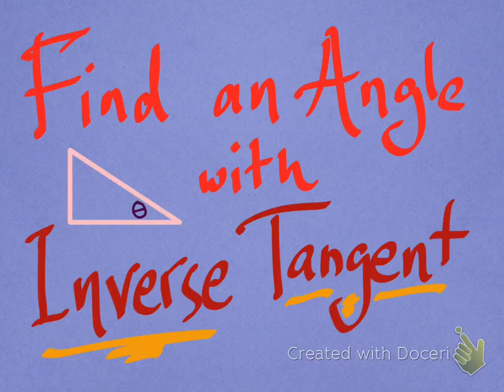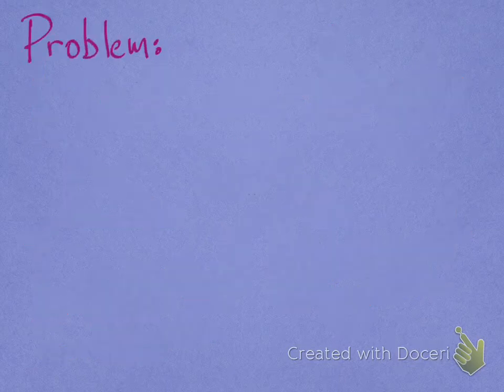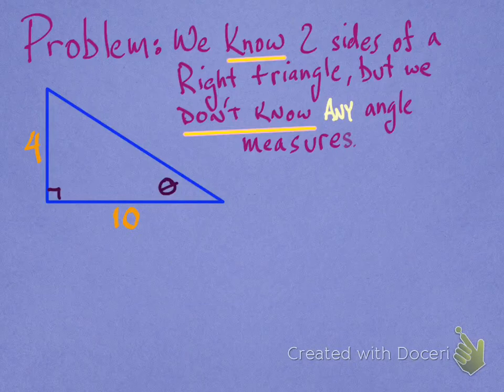I'll show you. I hope you think it's pretty easy once we're done with this. All right, so let's say we've got a little problem. We know two sides of a right triangle, but we don't know any of the angle measures of that triangle.